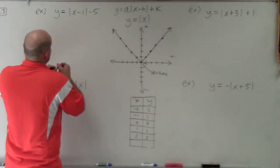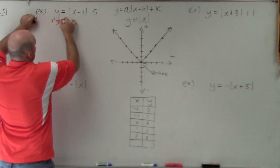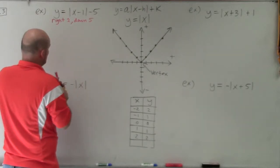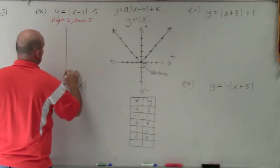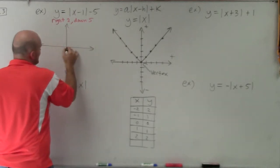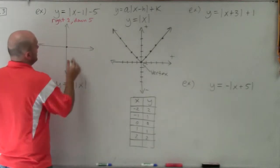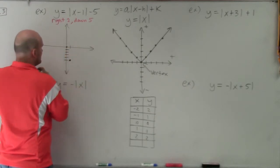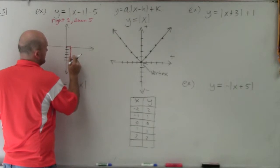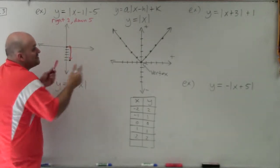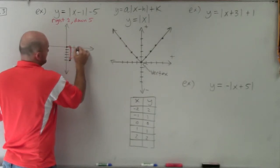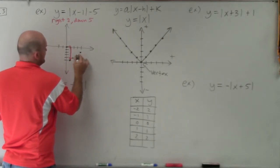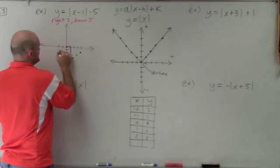So here, my first transformation — x minus 1 — is going to tell me to shift the graph right 1 and down 5. Those are the only two transformations. If I was graphing the parent graph, the vertex would be at (0, 0), but now I shift it one unit to the right and down 5 — 1, 2, 3, 4, 5 — so that's my new vertex. I just recreate my parent graph from there. The parent graph has the same slope: over 1, up 1, over 1, up 1. That ratio of the slopes has not changed.